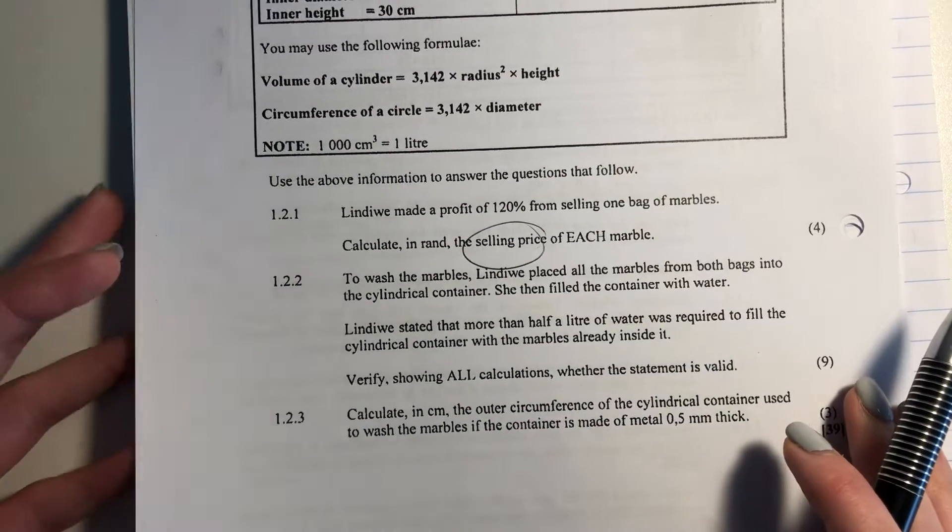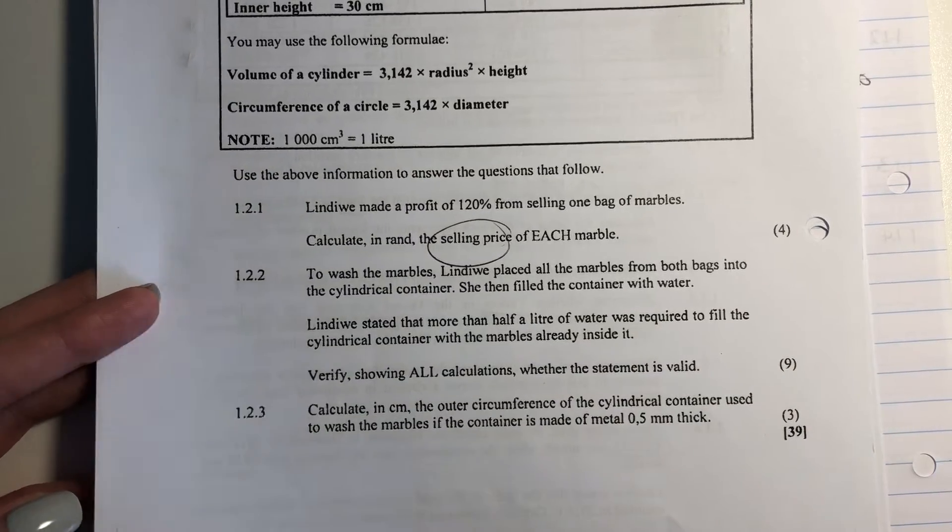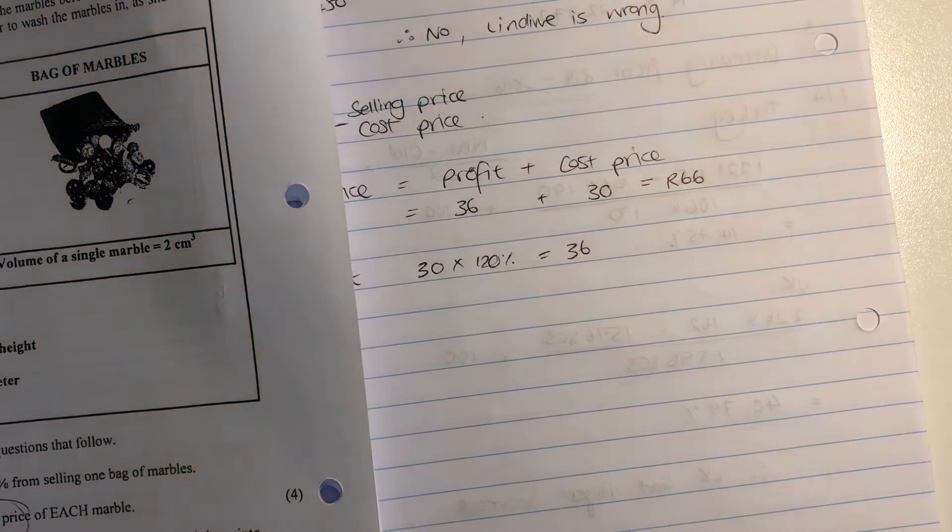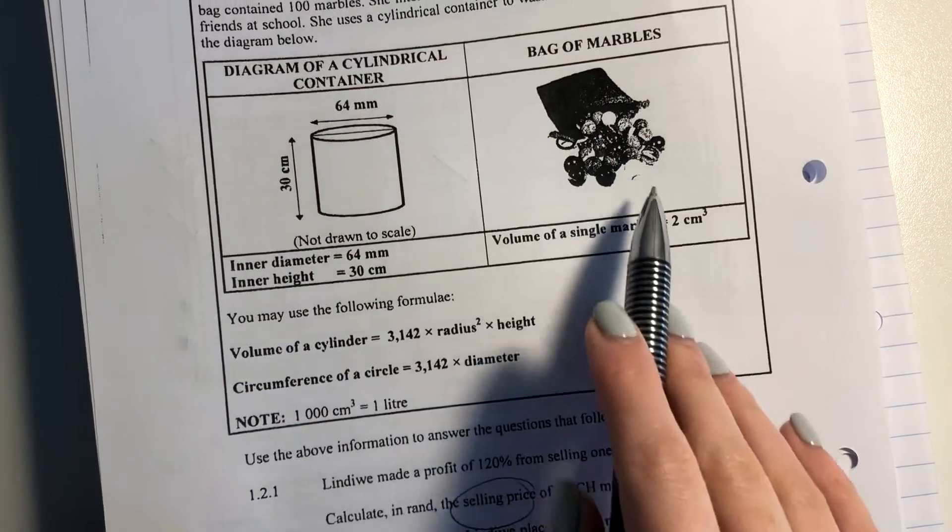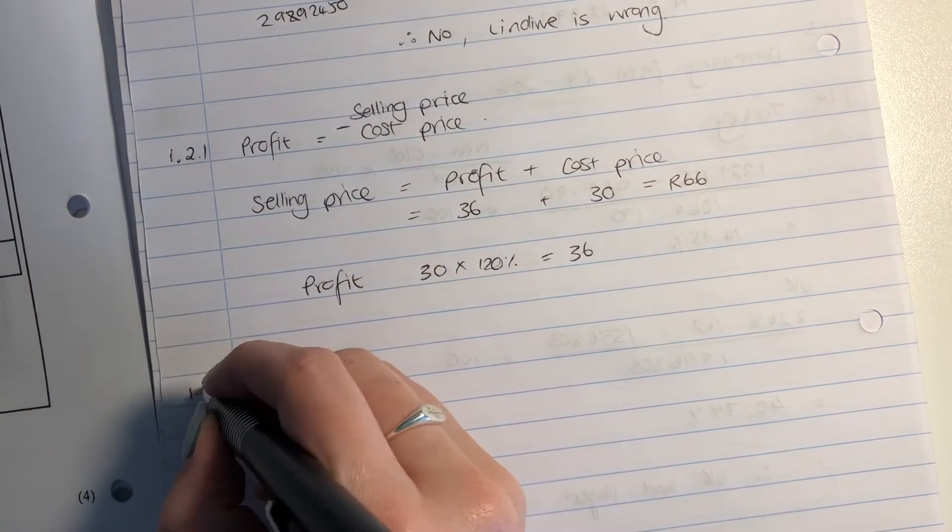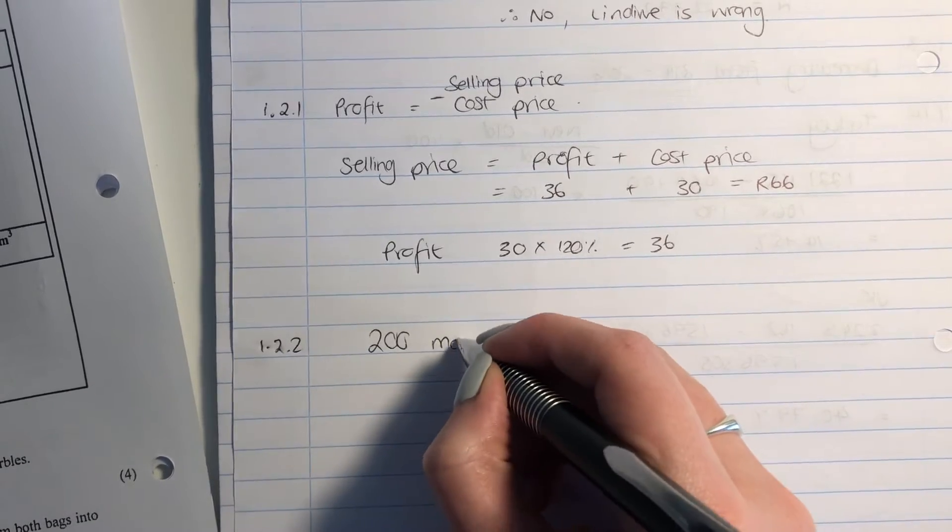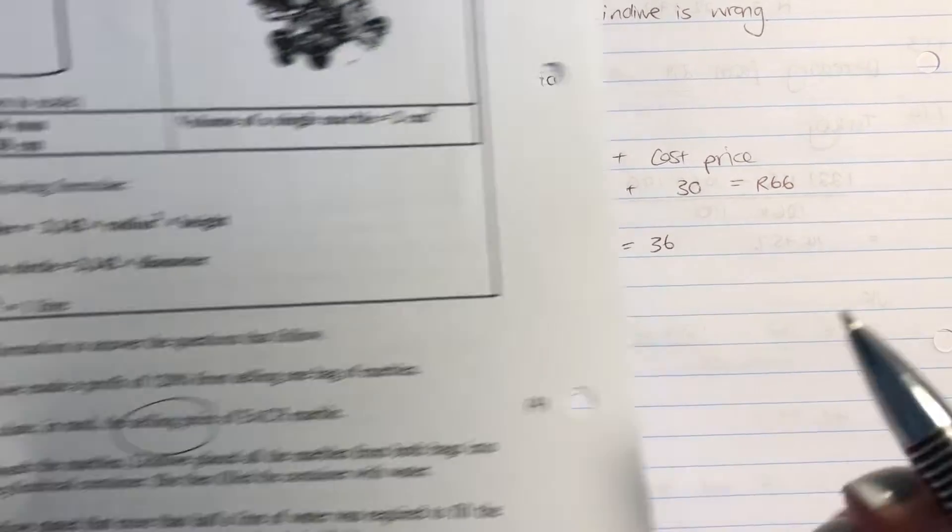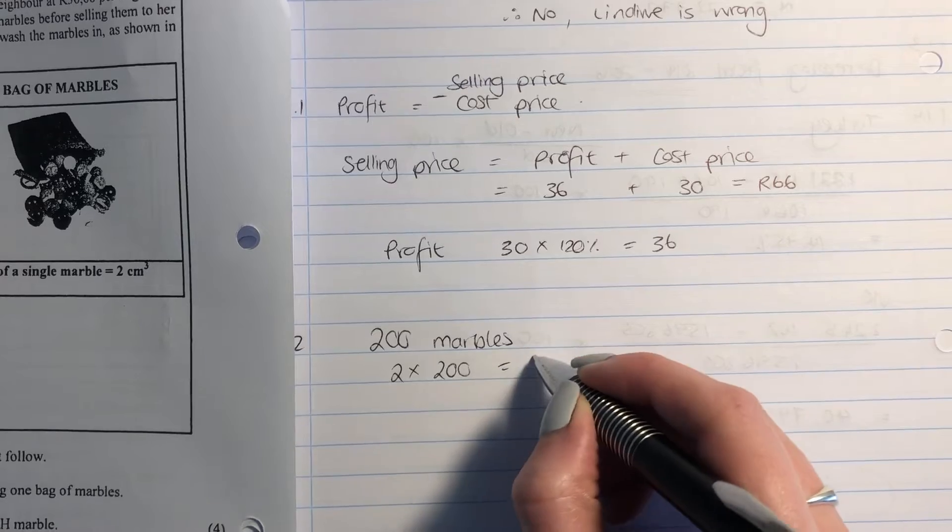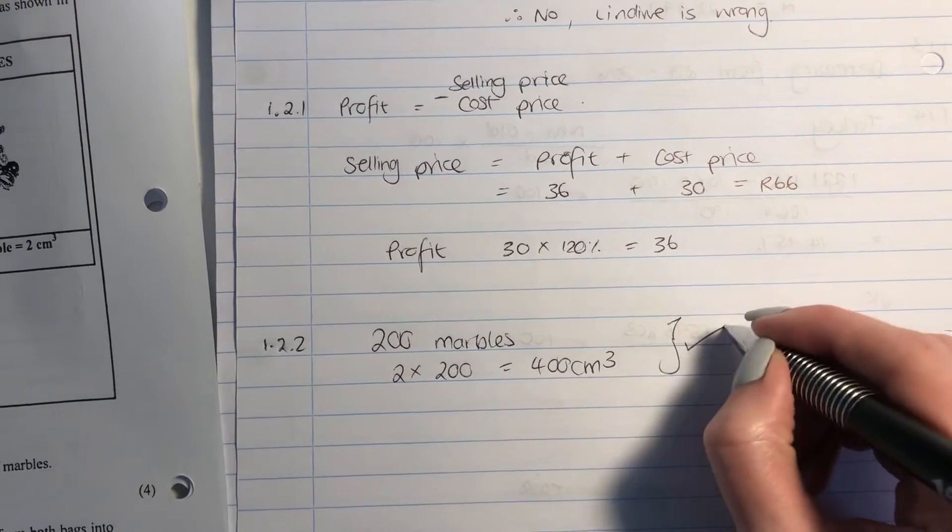I think what happens often is students see questions that are nine marks and they're like, I'm done. Don't be. Break it down into small pieces and let's do it together. So let's look here again. So here's marbles. How many marbles do we have? We have two bags of 100 marbles. So let's write this nicely so that we are on top of it. So we have 200 marbles. And what did it tell us? It told us that each of them had a volume of two centimeters cubed. So we're going to say two times 200 gives me 400 centimeters cubed. So that is our marbles accounted for.